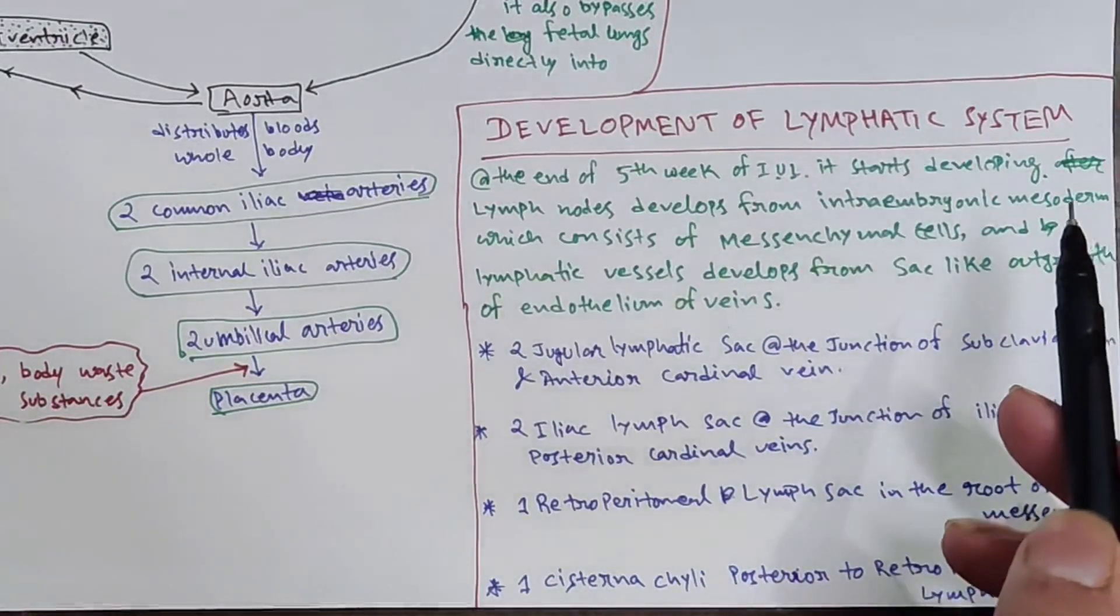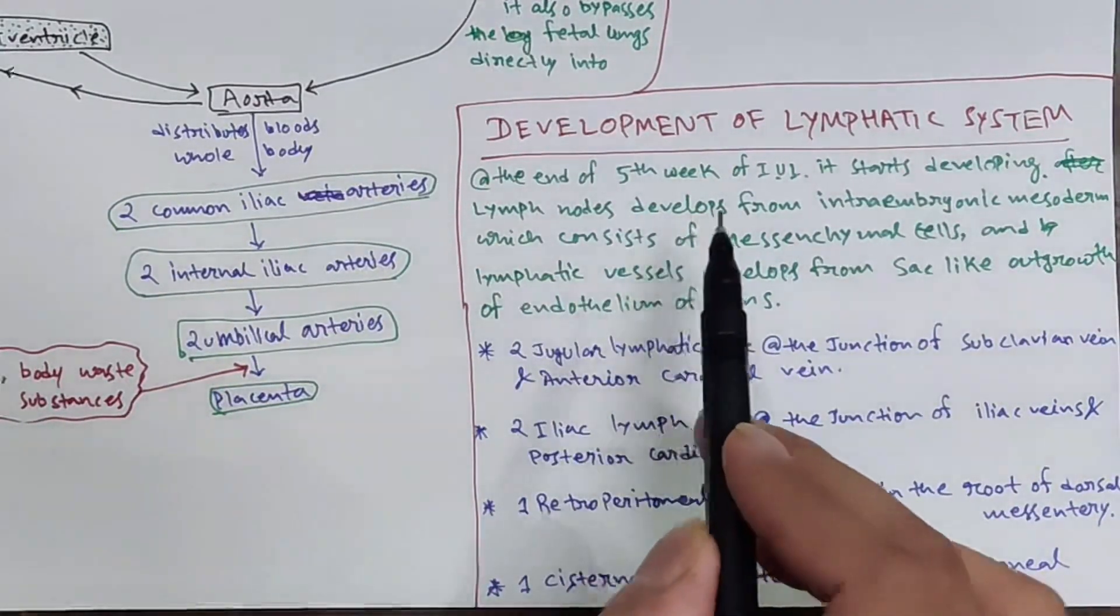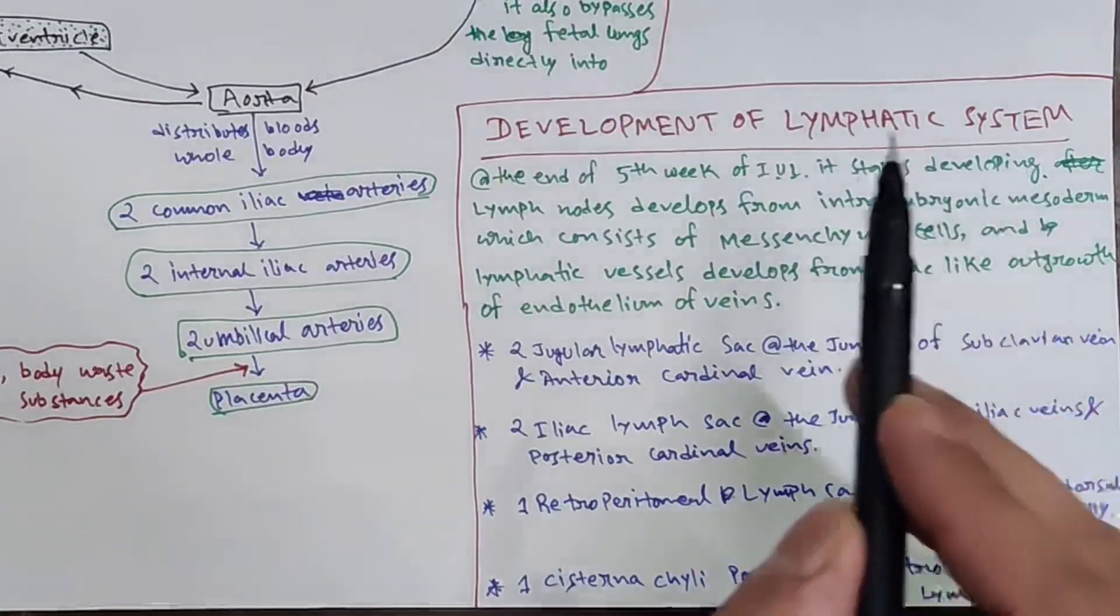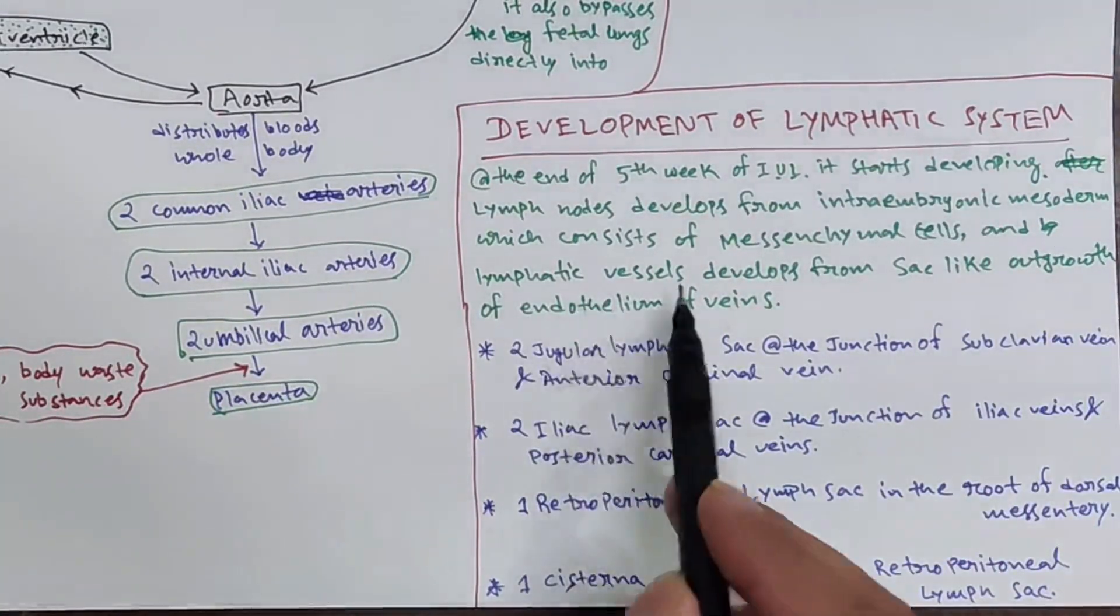Lymph nodes develop from the intraembryonic mesoderm which consists of mesenchymal cells, and lymphatic vessels develop from the sac-like outgrowth of the endothelium lining of the veins.